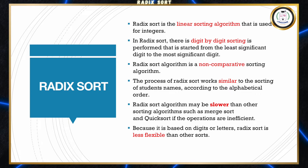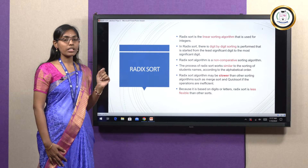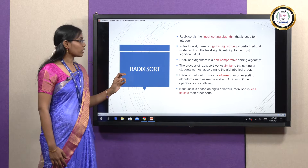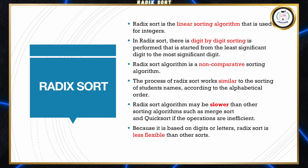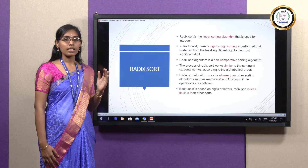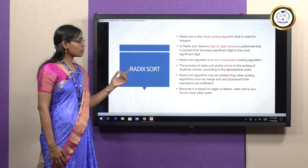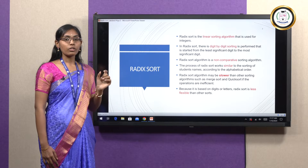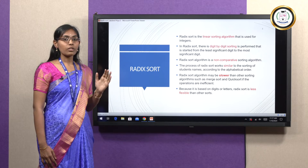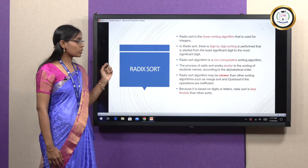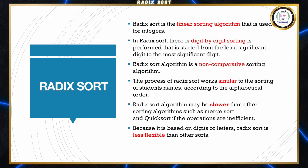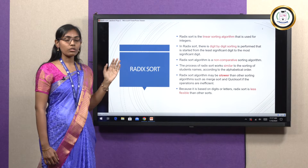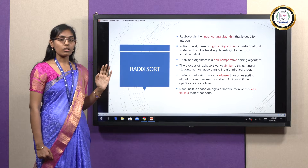Radix Sort is a linear sorting algorithm which sorts digit by digit. If you have three digits, one by one digit we are going to check and sort. It is a non-comparative sorting algorithm — you are not going to compare each and every element; instead we compare based on digit-by-digit sorting. This is similar to how we sort students' names in alphabetical order: A comes first, then B, then C. Likewise, digit by digit we sort in Radix Sort. This is slower compared to other sorting algorithms like Quicksort or Merge Sort, and less flexible because it compares one digit at a time.